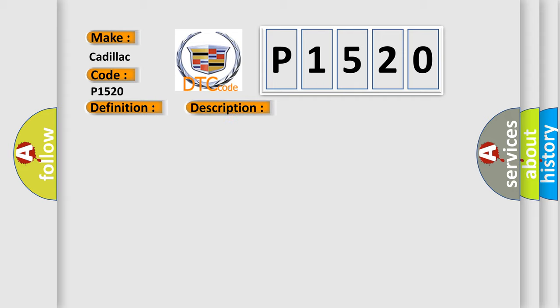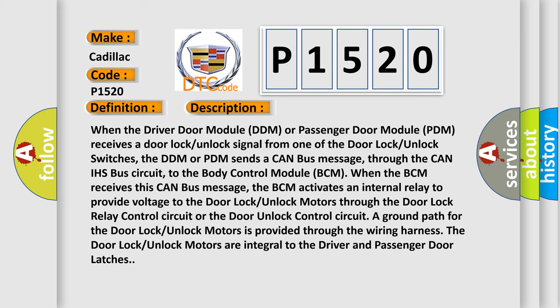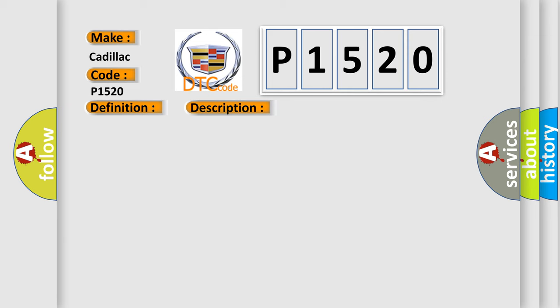The basic definition is: All doors unlock control circuit short to battery. When the driver door module (DDM) or passenger door module (PDM) receives a door lock/unlock signal from one of the door lock/unlock switches, the DDM or PDM sends a CAN bus message through the CAN IHS bus circuit to the body control module (BCM). The BCM then activates an internal relay to provide voltage to the door lock/unlock motors through the door lock relay control circuit or the door unlock control circuit. A ground path for the door lock/unlock motors is provided through the wiring harness. The door lock/unlock motors are integral to the driver and passenger door latches.